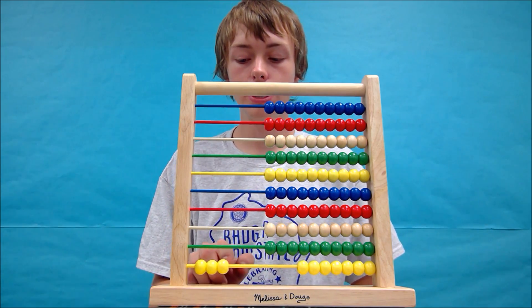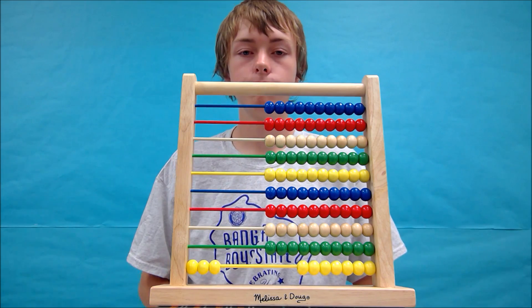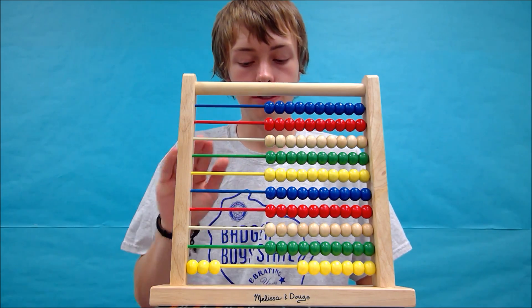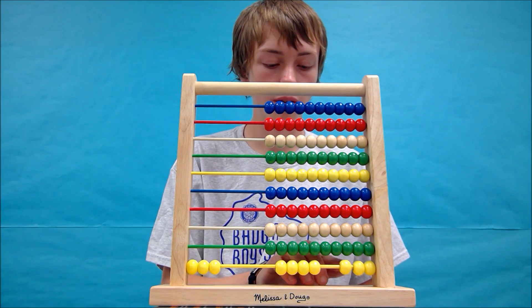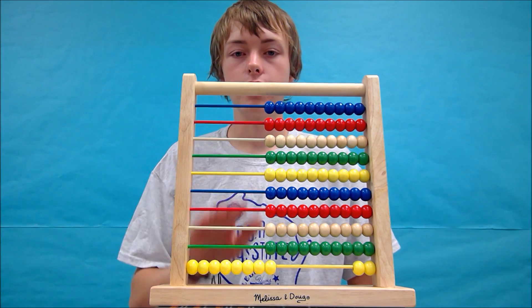So we will move 3 beads on their own. Now that we have the 3, we will add 5 more beads. So 2, 4, 5 and that gives us our number.